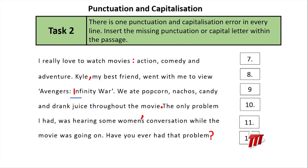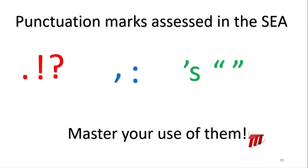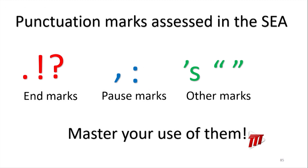So we have our entire passage: 'I really love to watch movies: action, comedy, and adventure. Kyle, my best friend, went with me to view Avengers Infinity War. We ate popcorn, nachos, candy, and drank juice throughout the movie. The only problem I had was hearing some women's conversation while the movie was going on. Have you ever had that problem?' Congratulations — you've completed Task 2. Master your use of end marks, pause marks, apostrophe, and quotation marks. Stay tuned — Task 3 is coming up.